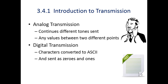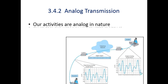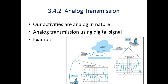Each and every individual character has its own unique ASCII value. It is converted into its unique binary value, and the binary value is in the form of ones and zeros. These ones and zeros are then sent over the network.